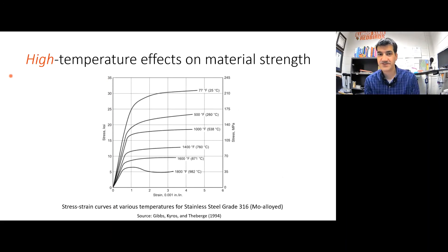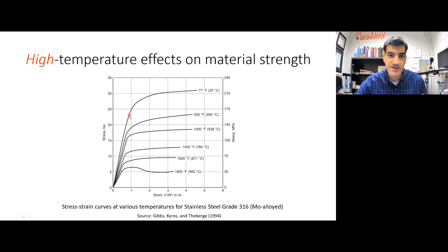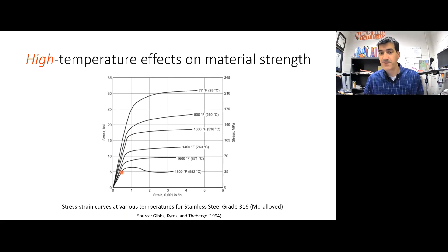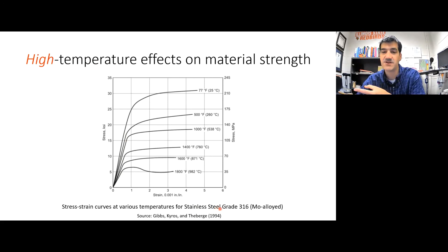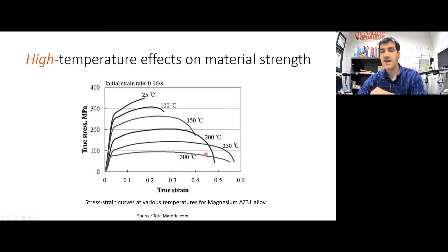Here are some experimental results. As temperature increases from 77°F to 500°F to 1,000°F to 1,400°F, the yield stress decreases and the ultimate tensile strength decreases correspondingly. This happens to be a stainless steel, but the same effects are true for metals generally. Here's another example with a magnesium alloy — once again, yield strengths and ultimate tensile strengths are reduced as temperature increases.